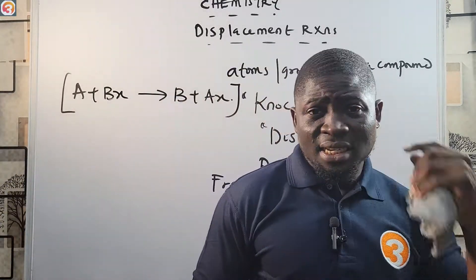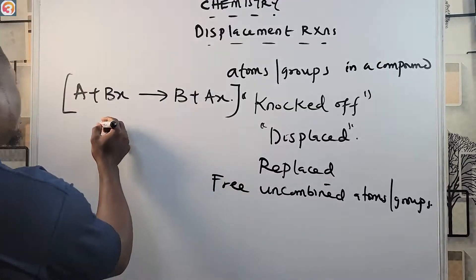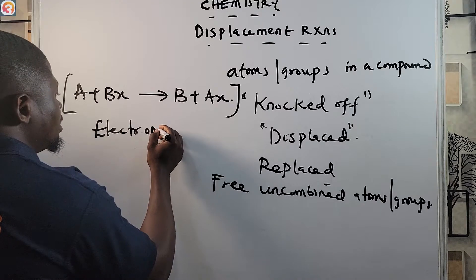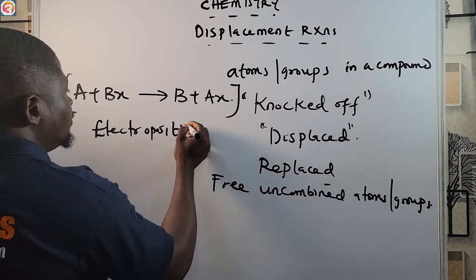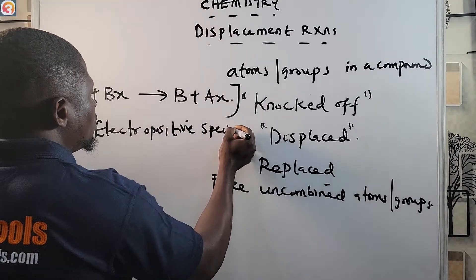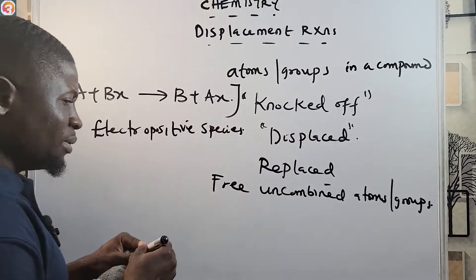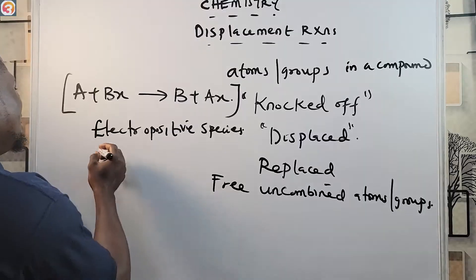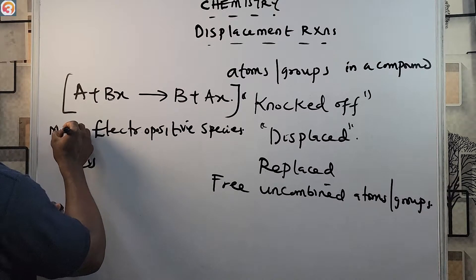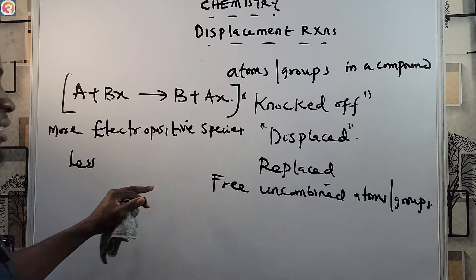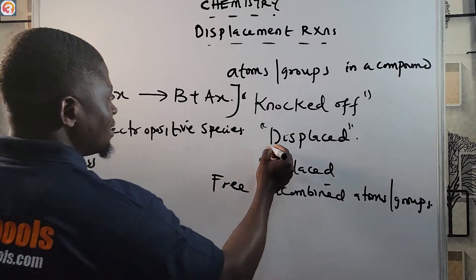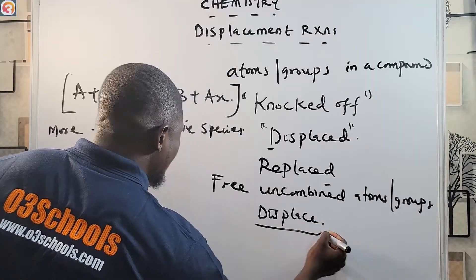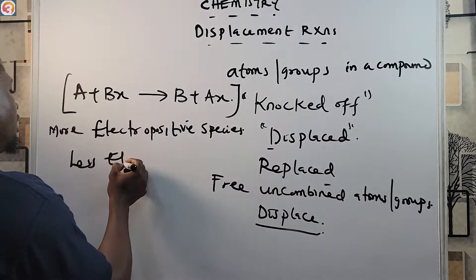For metals, the more electropositive species knocks off or displaces the less electropositive ones. The more electropositive species displaces the less electropositive ones.